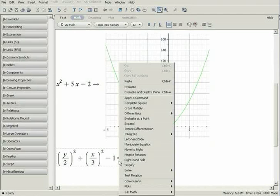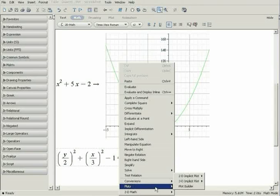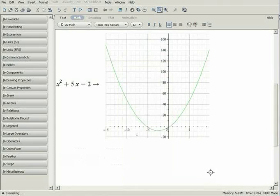Right-click again, and click on Plots, 2D Implicit Plot, and x and y. The plot is displayed. Thank you very much.